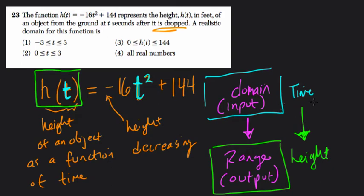So here, though, asking for realistic ways of describing a domain. In other words, realistic ways of describing the time. Which of these choices could represent actual times?